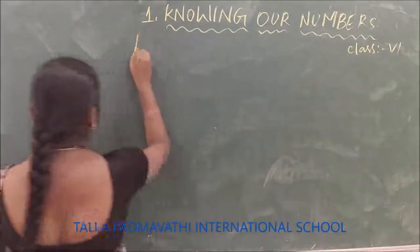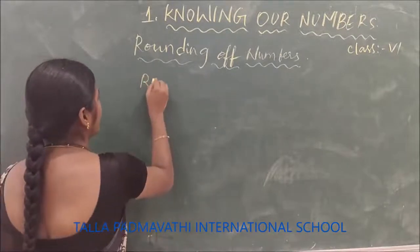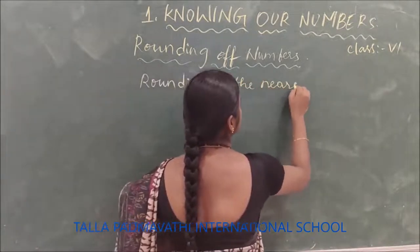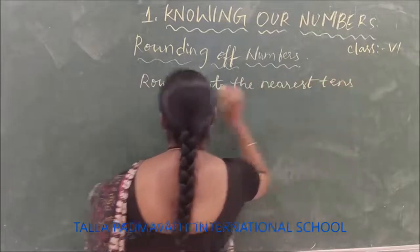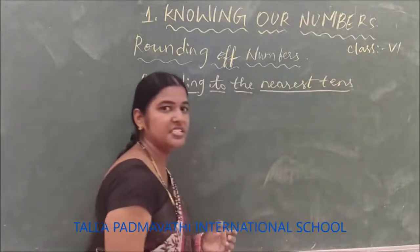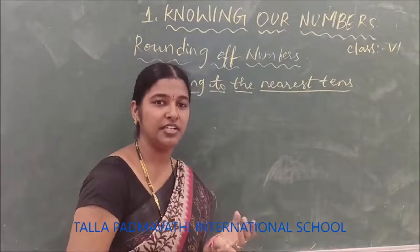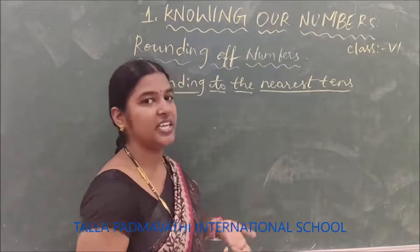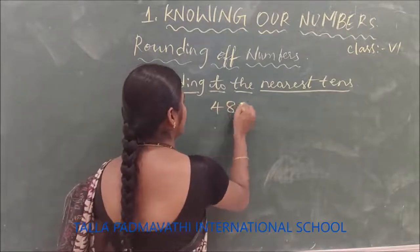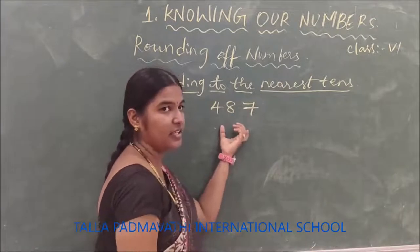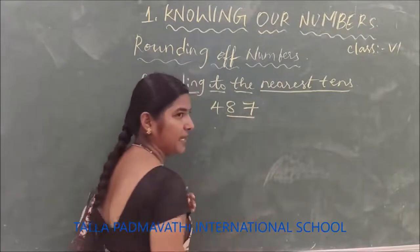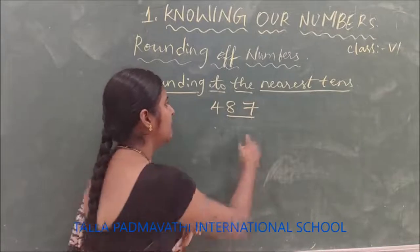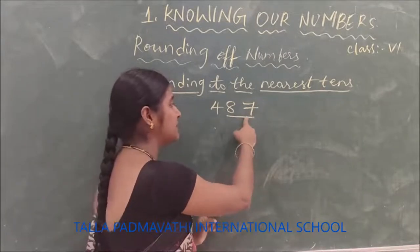Rounding of numbers — in this we have rounding to the nearest tens. Here on the tens number line you have 10, 20, 30, 40, 50, 60, 70, 80, 90. So let us take the number 487. We look at the tens place and the ones place. When we are rounding off to the nearest tens, the ones place becomes 0.